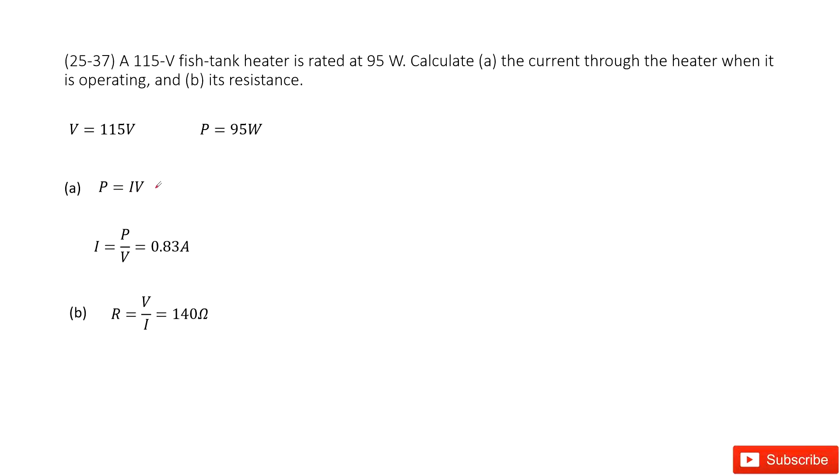Convert this equation. You can get the function as current equals power over voltage. Input the P and V to get the answer there, 0.83 amps.